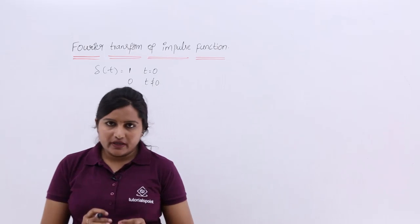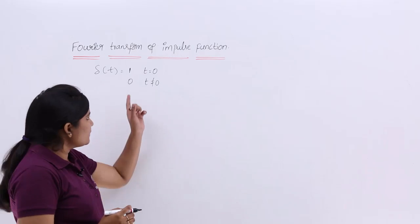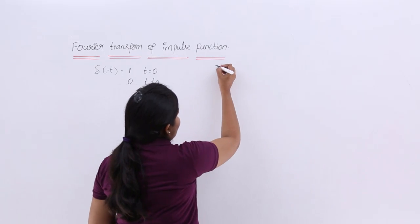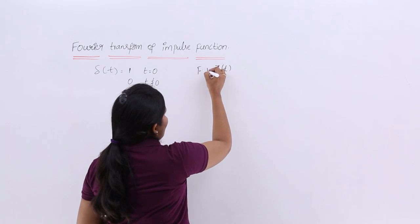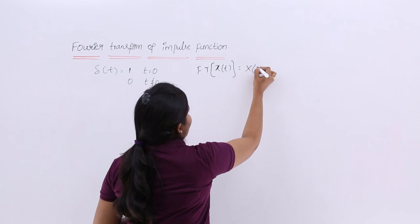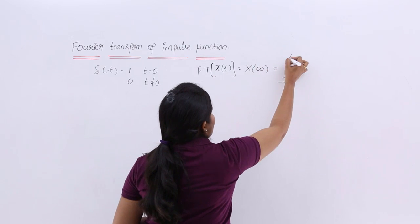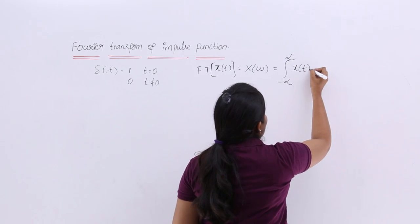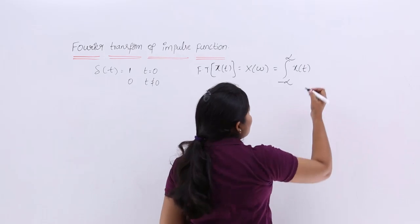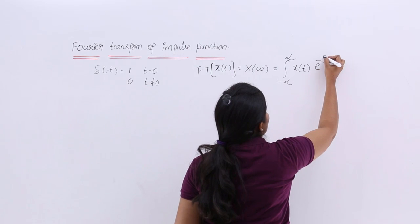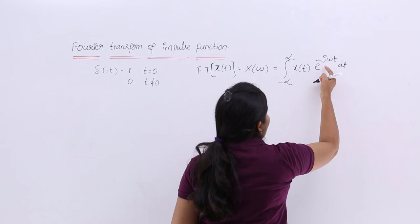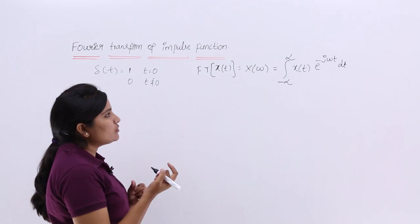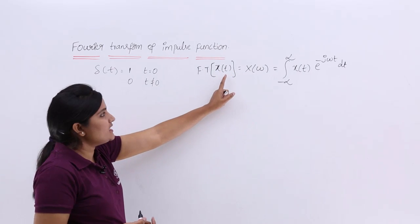Now we want to derive the Fourier transform for this type of function. First we need the Fourier transform equation. For any signal x(t), the Fourier transform X(ω) is given by the integral from minus infinity to infinity of x(t) multiplied by e^(−jωt) dt. By multiplying this exponential and integrating, the signal is converted into the frequency domain.